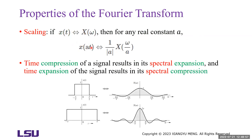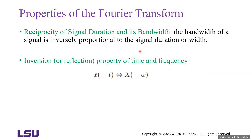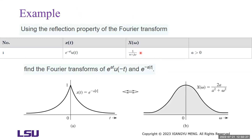In the scaling property, if we let A equal negative 1, then x(-t) and X(-omega) are a Fourier transform pair. This is the inversion or reflection property of time and frequency. We can use the reflection property of the Fourier transform to find the Fourier transform of e^(at) u(-t), where u(t) is the unit step function, making u(-t) the time reversal of the unit step function.